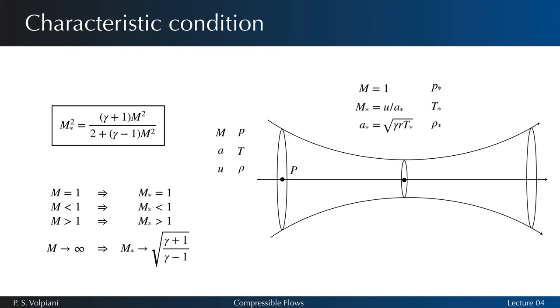For M very large, M star tends to the value of the square root of gamma plus 1 over gamma minus 1. The use of characteristic quantities is very useful when studying supersonic flows in nozzles.